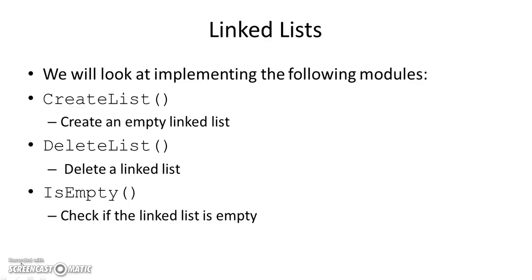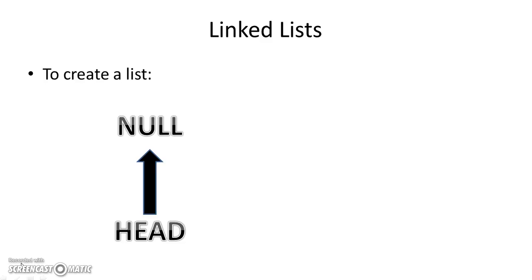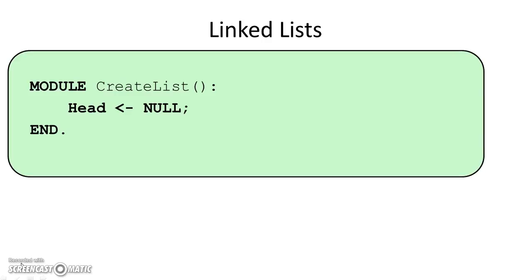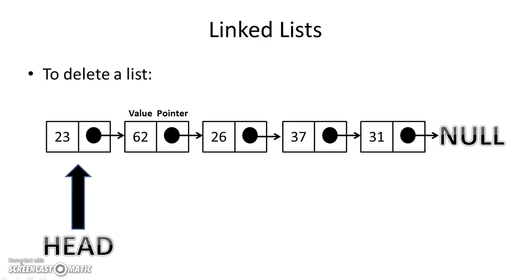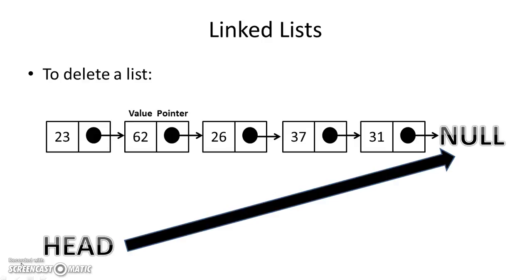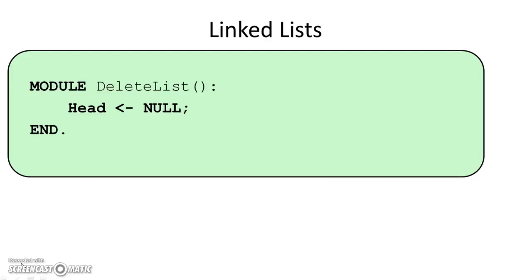We'll look at implementing the following modules: how to create a linked list, delete a linked list, and check if it's empty. To create an empty list, we simply set the head pointer to null. To delete a linked list, we change the head pointer from pointing to 23 to pointing to null — the list is gone because starting at head it just points to null.